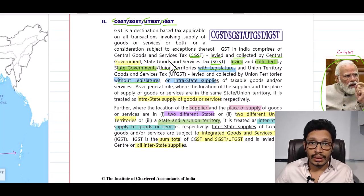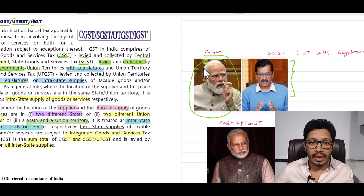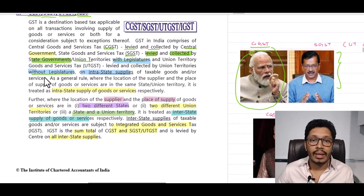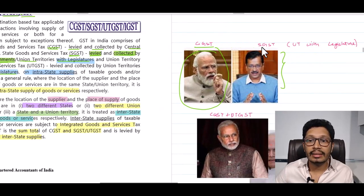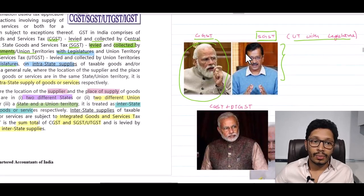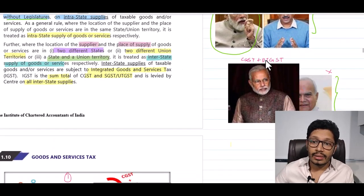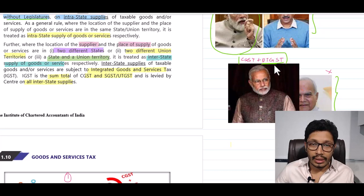In Union Territories with Legislature, like Delhi, there are state elections and an elected government — for example, the Arvind Kejriwal government. Because they have a Legislature, they can levy SGST. Union Territories without Legislature, however, cannot levy SGST; instead, UTGST applies there, levied and collected by the central government.